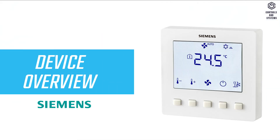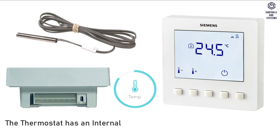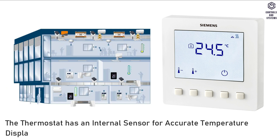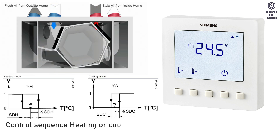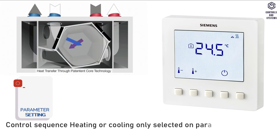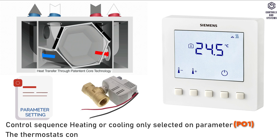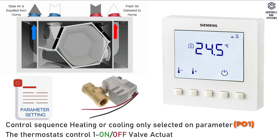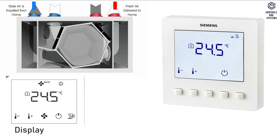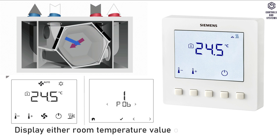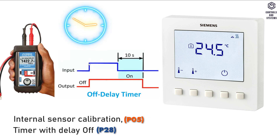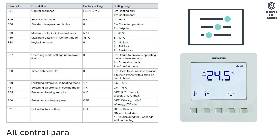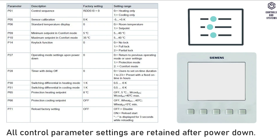Device overview: the thermostat has an internal sensor for accurate temperature display and to maintain room temperature. Control sequence — heating or cooling only — is selected on parameter setting. The thermostat controls one on/off valve actuator. The display shows either room temperature value or set point value, selected on parameter setting. Internal sensor calibration and timer with delay-off controls are available, and all control parameter settings are retained after power down.